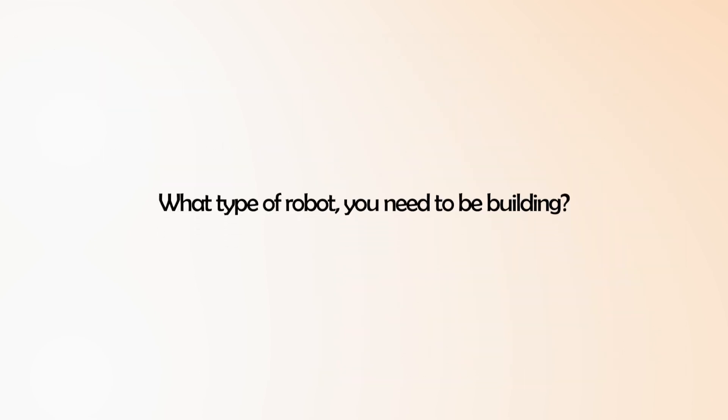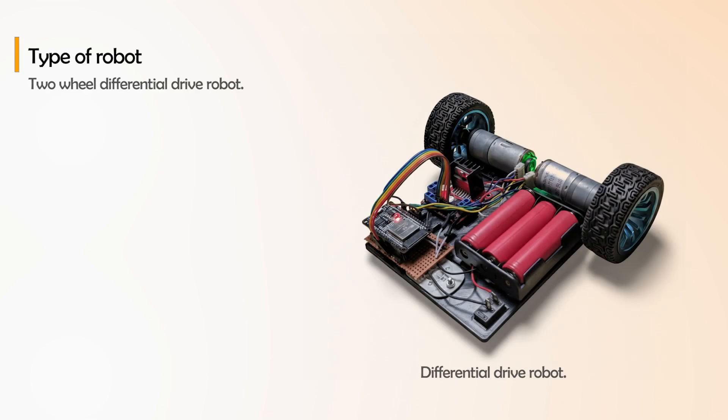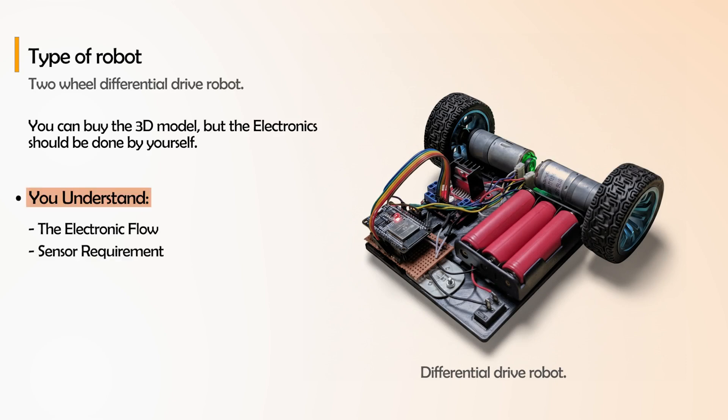The next question is what type of robot you need to be building: a two-wheel differential drive. You can buy the 3D model, but electronics should be done by yourself so you understand the electronic flow, sensor requirement, microcontroller requirement, and all of these things. No need to start from very high-end electronics - just keep it simple. Two differential drive, it's very cheap just to understand how to control the robot and how to read the sensor. That's the main objective.